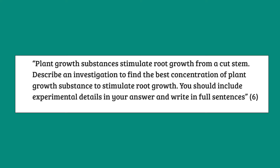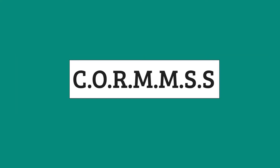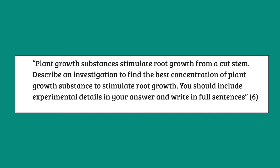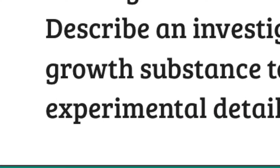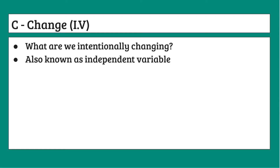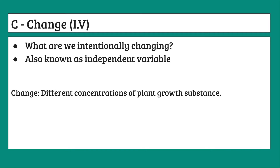That's where the abbreviation QORMS comes in. We'll go through each letter in order, starting with C, which stands for change. This looks at what we are intentionally changing in the investigation — another name for this is the independent variable. In our example, we are finding the best concentration of plant growth substance to stimulate root growth, so our change will be the concentration of plant growth substance, as that's what we need to alter to find out which is best.